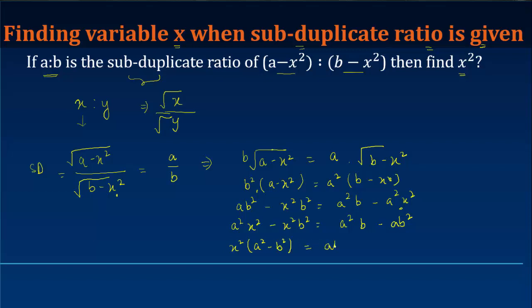Now, if I just solve this further, you can write this as x² times (a minus b) times (a plus b). This is because a² minus b² can be written as (a minus b) times (a plus b), is equal to ab(a minus b). This (a minus b) gets cancelled with this.